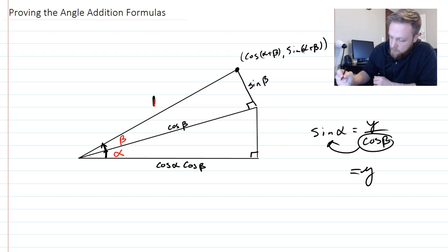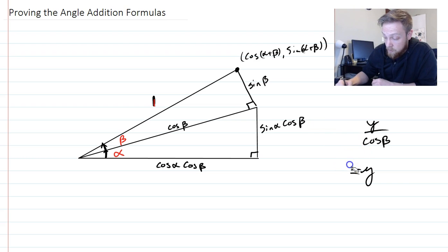So let me erase that and write that in here. This would be sine alpha cosine of beta. So going this far, I think you can kind of see now where the cosine cosines, where the sine cosines are coming from.